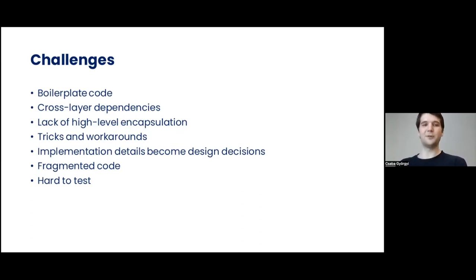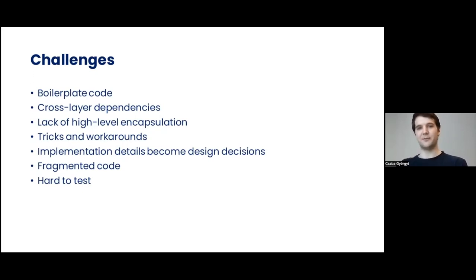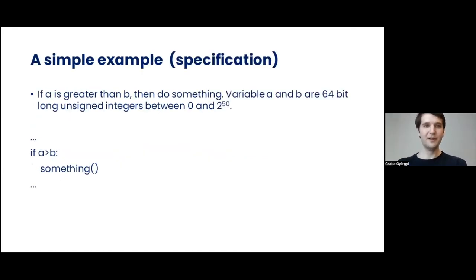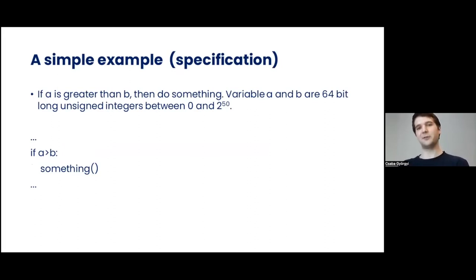We might need many tricks and workarounds. Our implementation details might turn into design decisions, our code might become fragmented, and finally it is very hard to test our solution until everything is in place and we can start processing packets. Let me show you an illustrative example: suppose that we have two sensor values and if A is greater than B, then we want to do something.